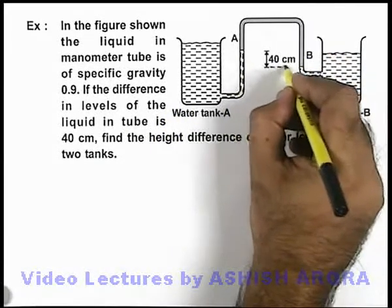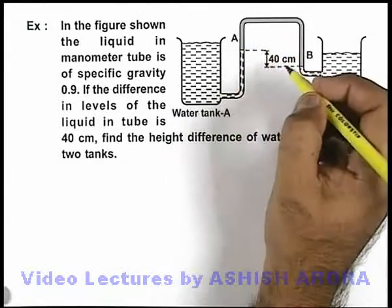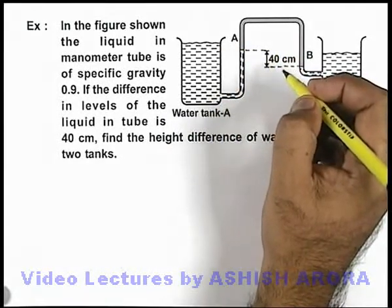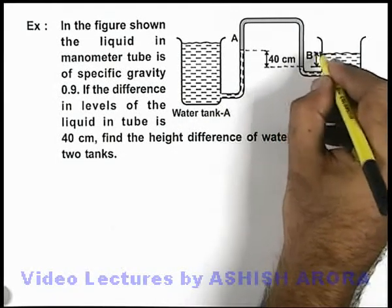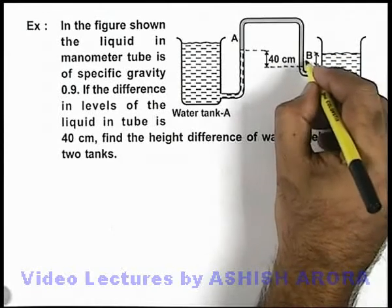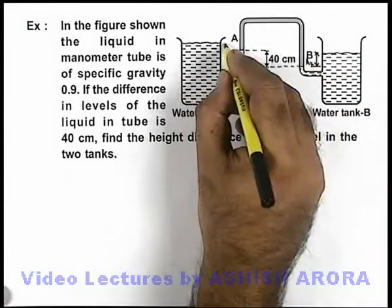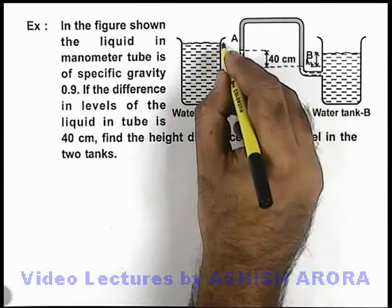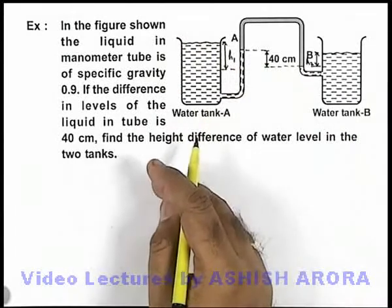Here we are given that this point B and point A are at a separation of 40 centimeters. Let us consider that B is located at a depth h2 below the water level. In this container, the point B is below a depth h1 from the water level.